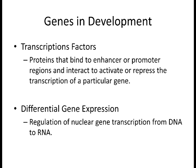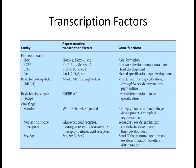The reason a cell creates transcription factors only to destroy them is so they're available at a moment's notice—because certain things must happen almost instantaneously in development. The cell can't wait half an hour to start making these proteins before responding. Many of these pathways involve proteins constantly being made and set up so the cell can respond to an inductive signal immediately. This is where differential gene expression comes into play: when the cell gets a signal, transcription factors are allowed into the nucleus and certain genes are transcribed based upon the inductive signal.